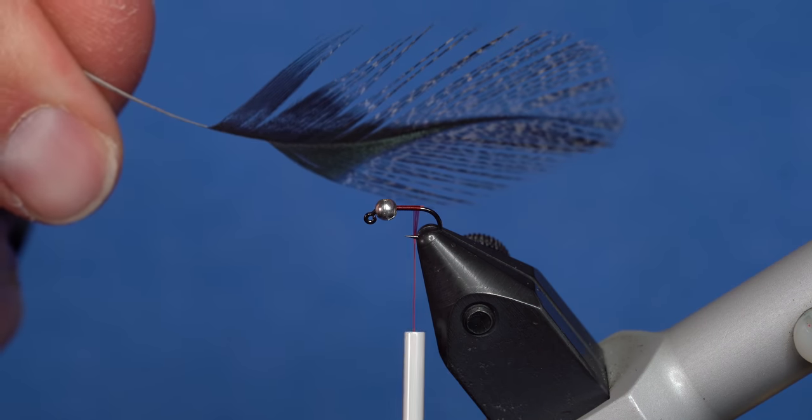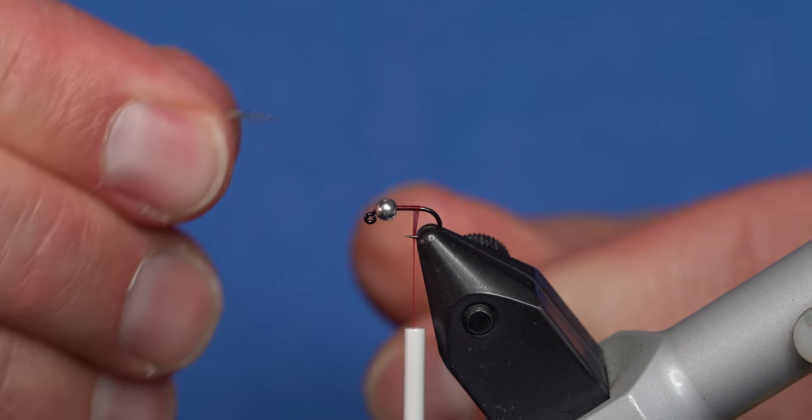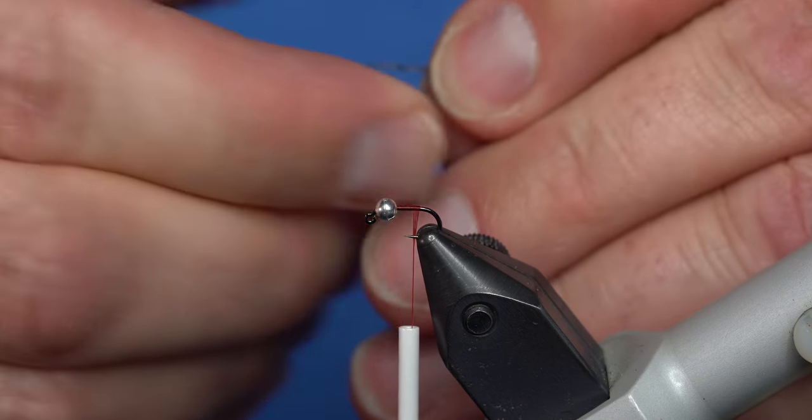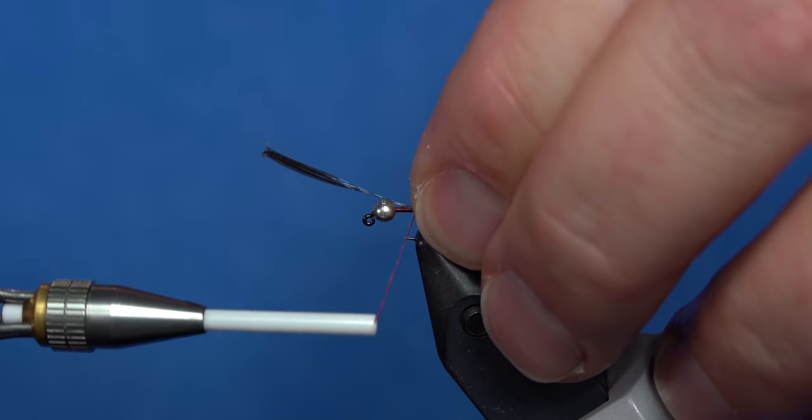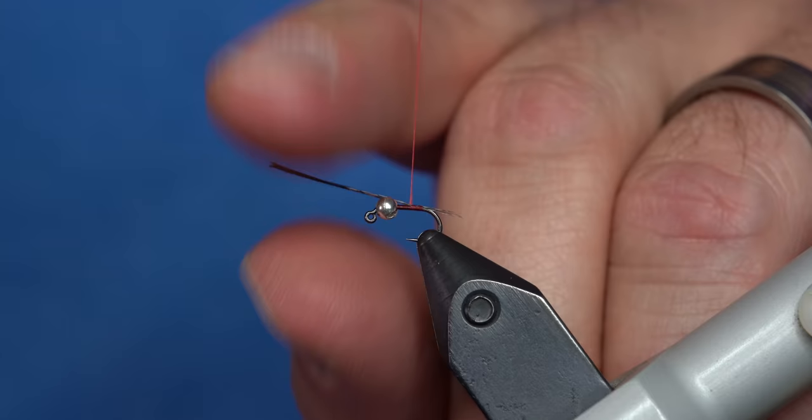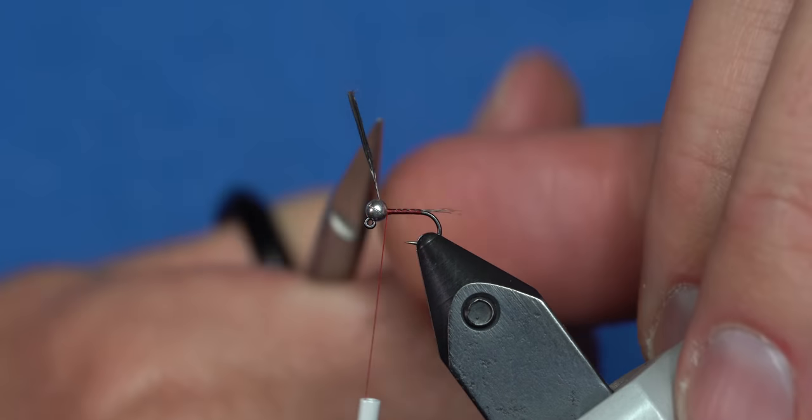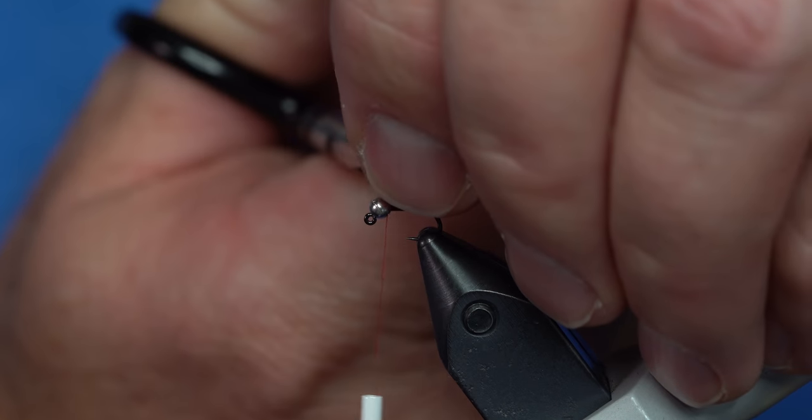For the tail, we're going to use some Coque de Leon. Anything that's medium or dark pardo would work just fine. Pull a few fibers of that off. We're going to capture them onto the hook like that. Then I'm going to wrap all the way to the bead, that way I don't have a tie-in bump at the back. I'm going to trim the excess.